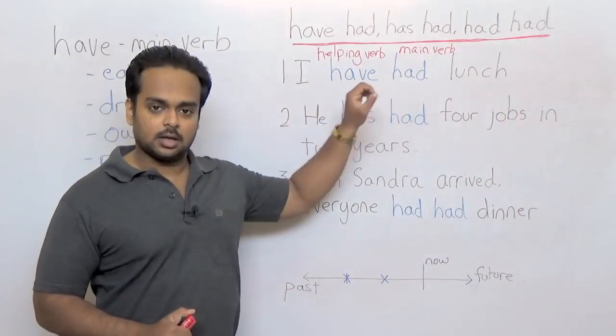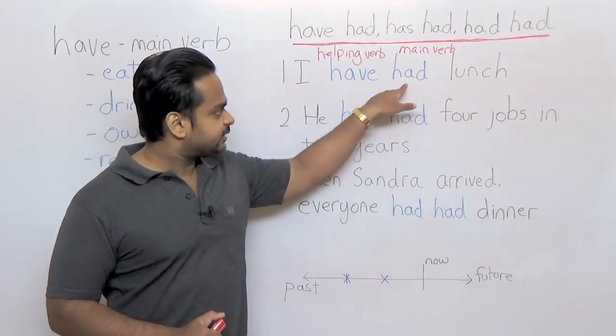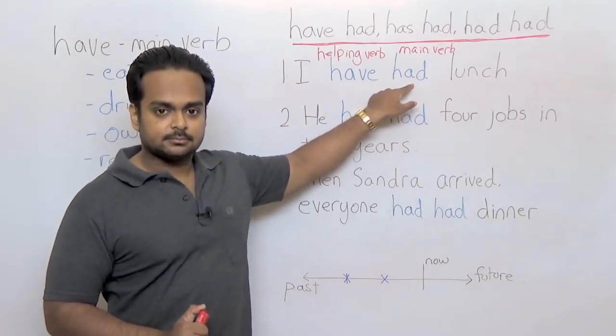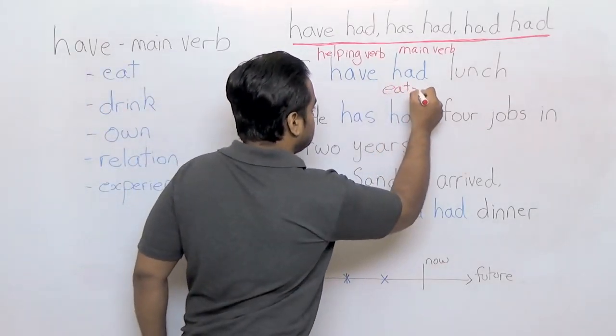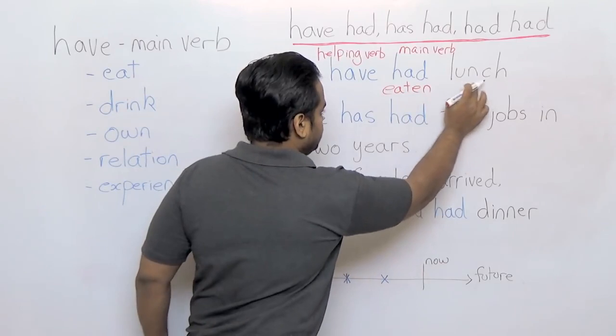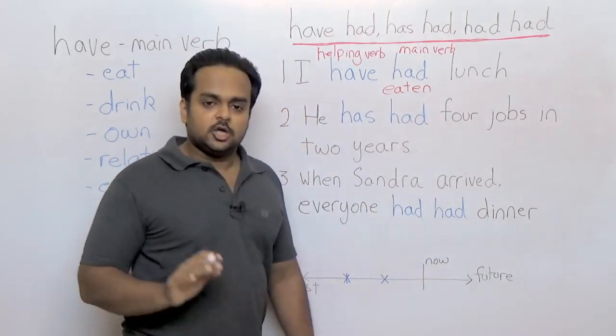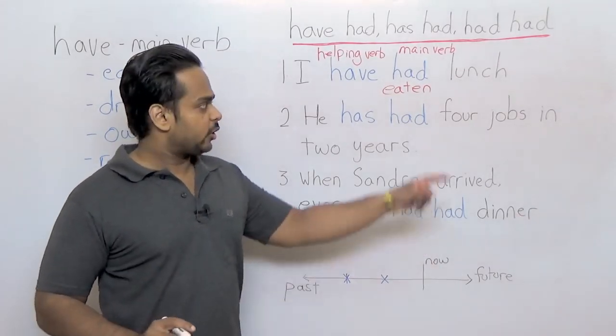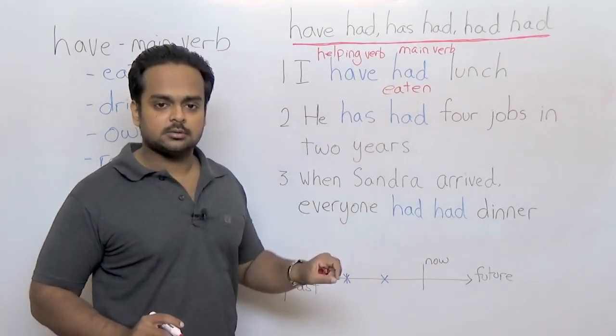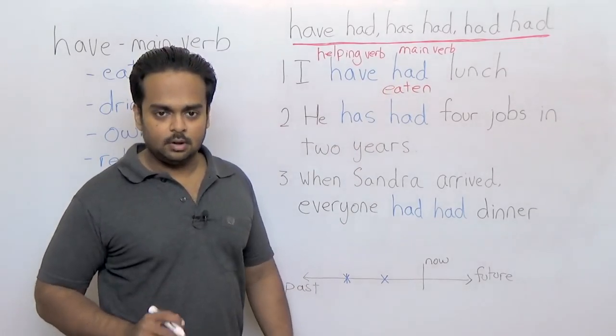Let's now look at our sentence. I have had lunch. So what could this had mean in this sentence? Well in this sentence it means eaten. Because here you see there's the word lunch. So this sentence just means I have eaten lunch. We are using had as the shortcut for eaten.